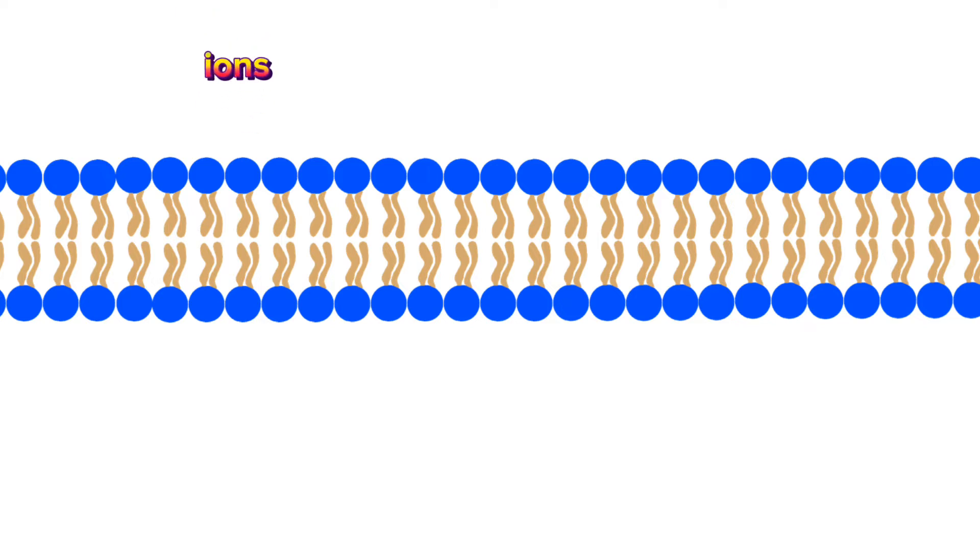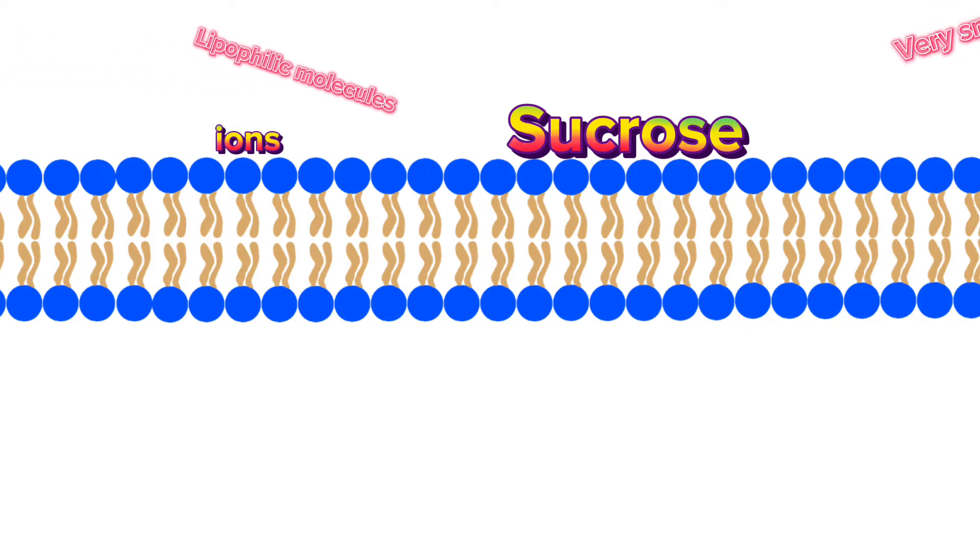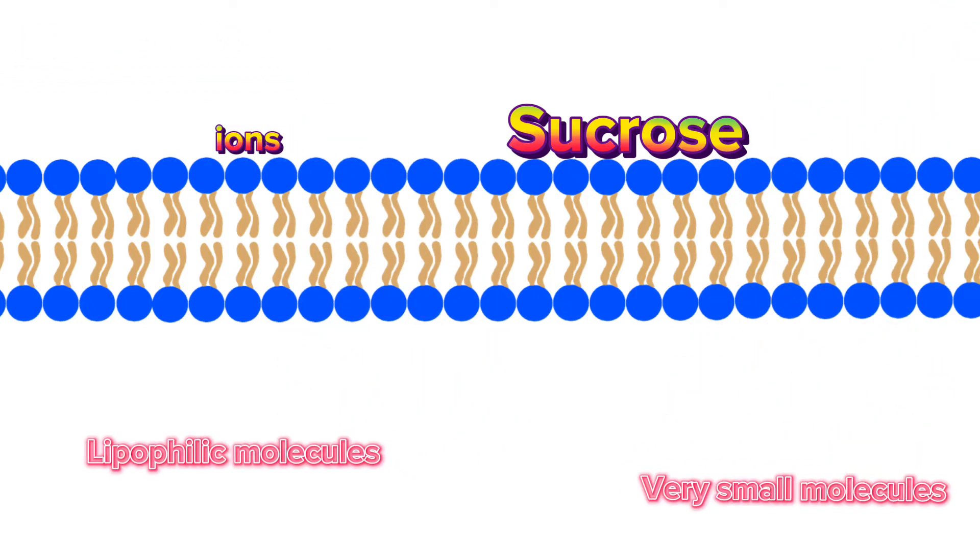The third one is by facilitated diffusion, which is also a kind of passive transport. As we know, small charged molecules like ions and large molecules like sucrose will not be able to pass easily like the lipophilic or very small molecules. They will need some help, but not energy. They just need a tunnel to pass through.